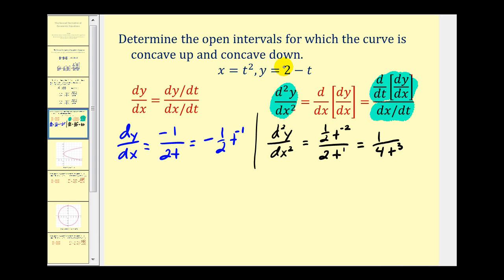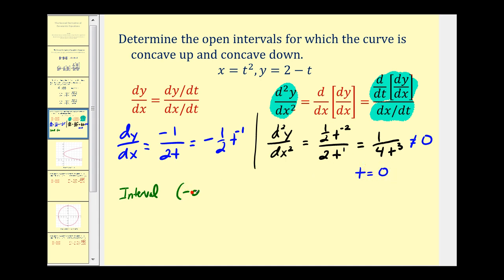To determine where the curve is concave up and concave down, we need to find where the second derivative equals zero or is undefined. This fraction will never equal zero since the numerator is one, but it will be undefined when t equals zero. We use t equals zero to divide the interval of all possible values of t. Since there are no restrictions on t, t ranges from negative infinity to positive infinity, giving us two intervals: negative infinity to zero, and zero to infinity.